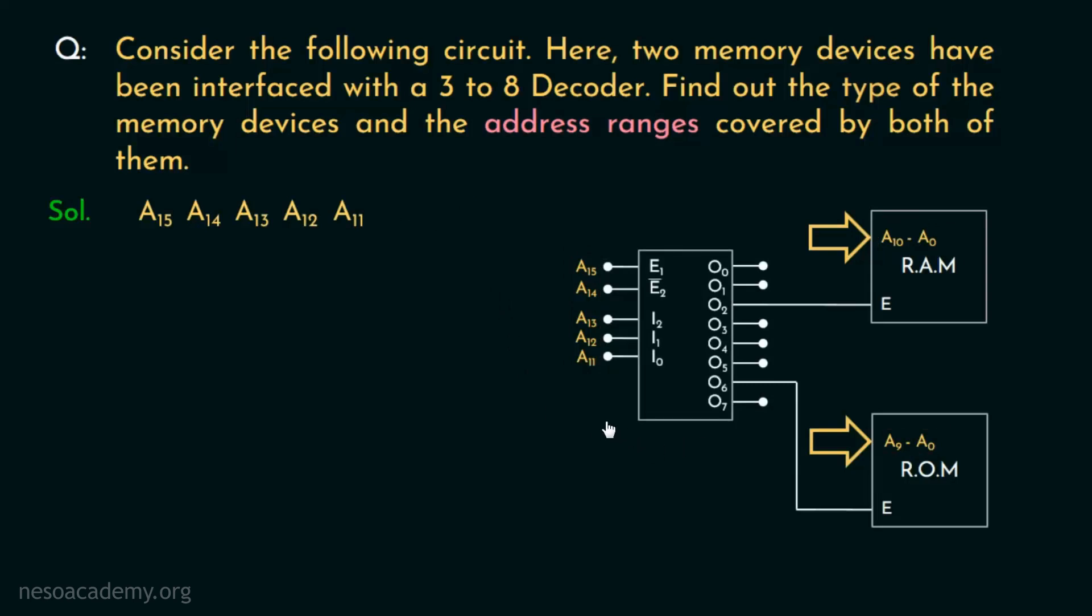As you can see, the address lines A15 to A11 are fed into the decoder. Let's figure out the values these should retain first. Now, the address line A15 is connected to the enable line E1. So we will naturally have to feed 1 through it to enable E1.